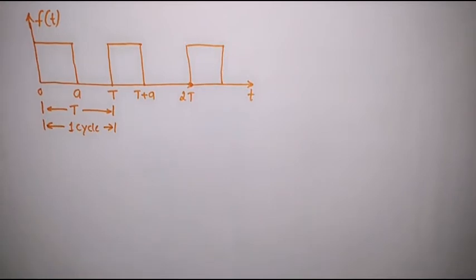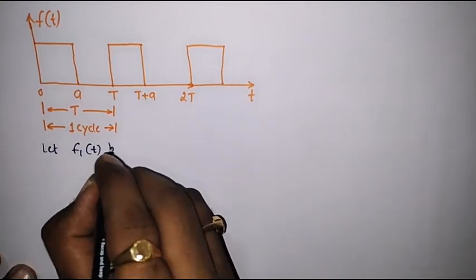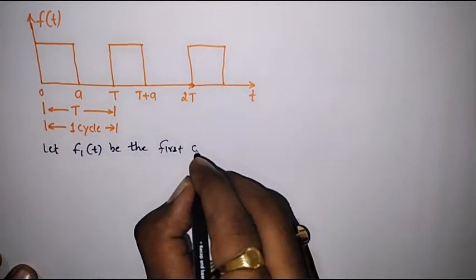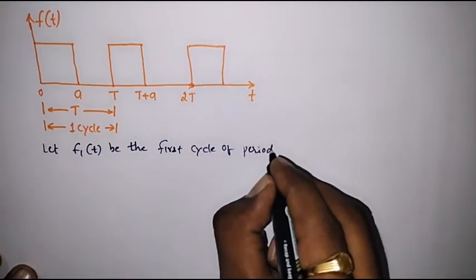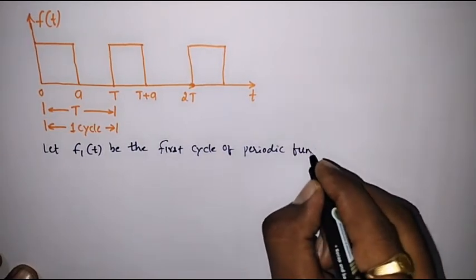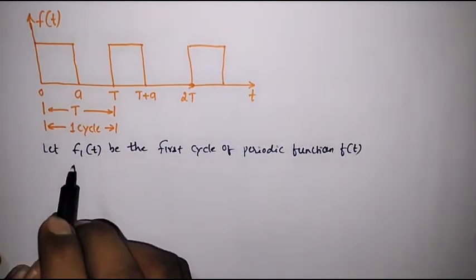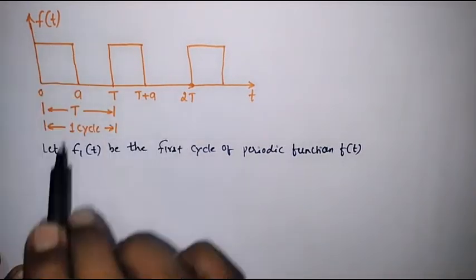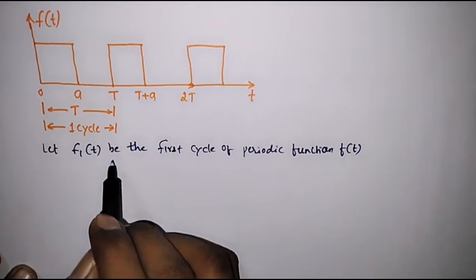So this one cycle of the periodic signal I will represent as f1(t). Let f1(t) be the first cycle of the periodic function f(t). This f1(t), that is the first cycle of f(t), I will try to represent in terms of the unit step function.